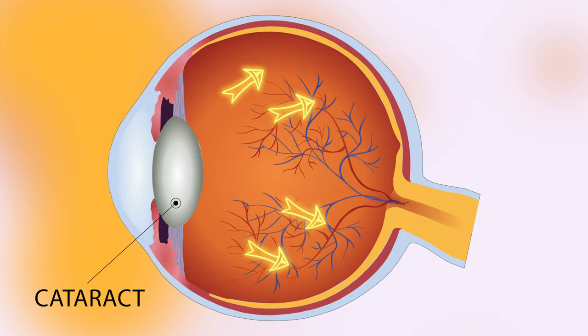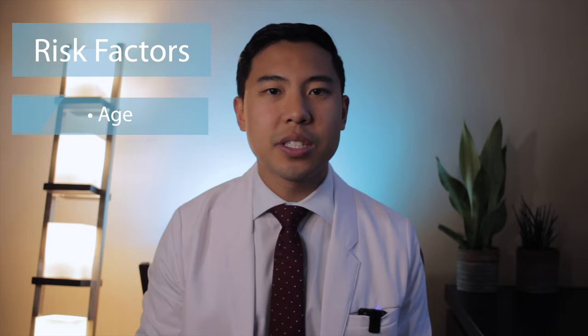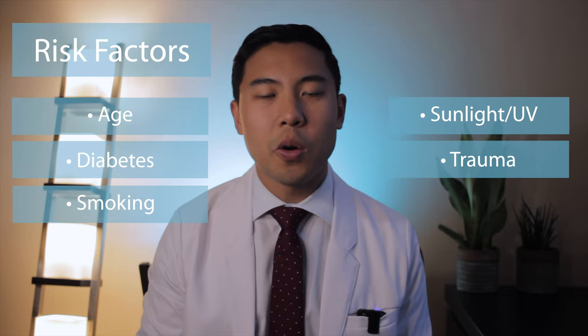Patients with cataracts typically notice visual symptoms such as cloudy or blurry vision, decreased night vision, glares or halos, as well as increased sensitivity to light. The most common risk factors for the development of cataracts include age, diabetes, smoking, exposure to sunlight or UV rays, trauma, or history of use of corticosteroid medication.